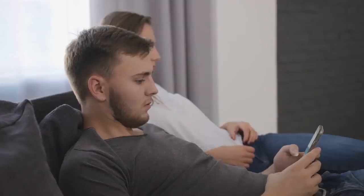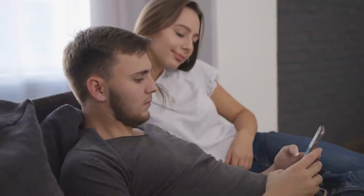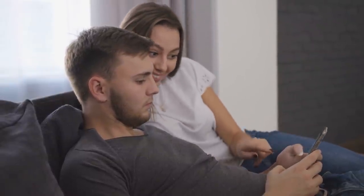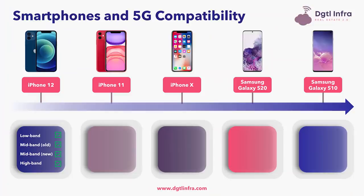Let's walk through five examples of major phones to show their compatibility with different 5G frequencies. First is the Apple iPhone 12, which has just been released and is compatible across three different spectrum bands. The iPhone 12 is compatible with low-band spectrum, including 600 MHz, 700 MHz, and 850 MHz frequencies.